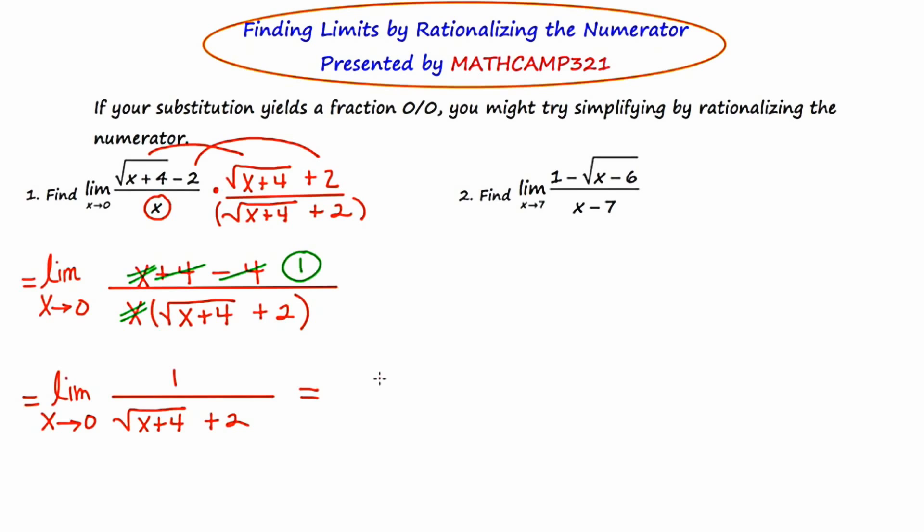So let's go ahead and plug in that zero and see what happens. I still have the one on the top. We know that plugging in zero right here for x gives us zero plus four, which is four. The principal square root of four is two, and two plus two is four. So we end up with the limit going towards one fourth. So rationalizing the numerator helped us out tremendously. It enabled us to do the direct substitution and get the desired result.